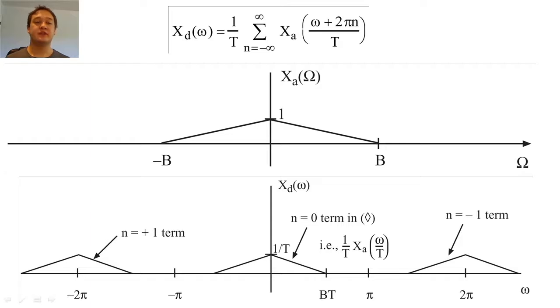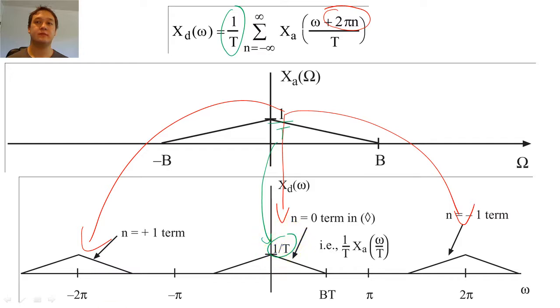Graphically, this equation tells us that we produce replicates of x sub a of omega at every 2 pi interval. We scale the Fourier transform by 1 over T, and finally, we scale the width of our FT by a factor of T.